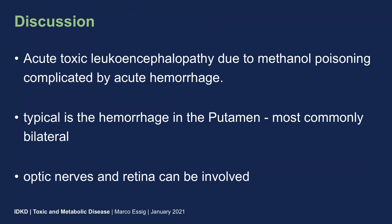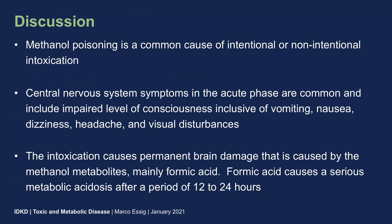The optic nerves and the retina can also be involved and can be assessed by clinical examination. Methanol poisoning is a very common cause of intentional or non-intentional intoxication. The central nervous system symptoms in the acute phase include impaired level of consciousness, vomiting, nausea, dizziness, headache, and visual disturbances. The intoxication itself causes permanent brain damage caused by the methanol metabolites, mainly formic acid. Formic acid causes a serious metabolic acidosis after a period of 12 to 24 hours, resulting in a leukoencephalopathy.